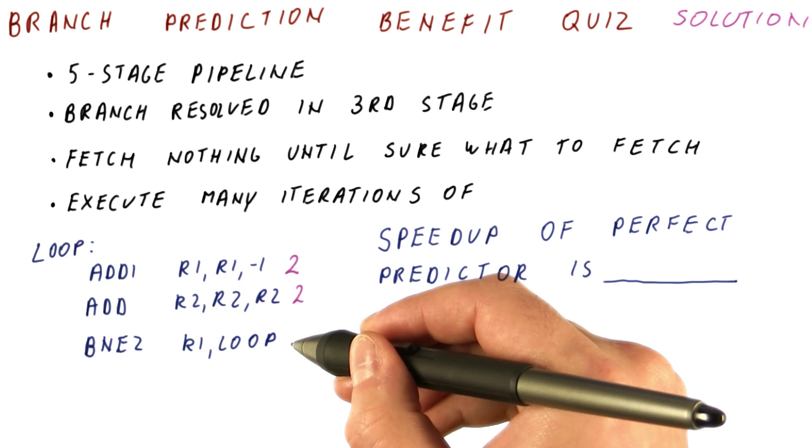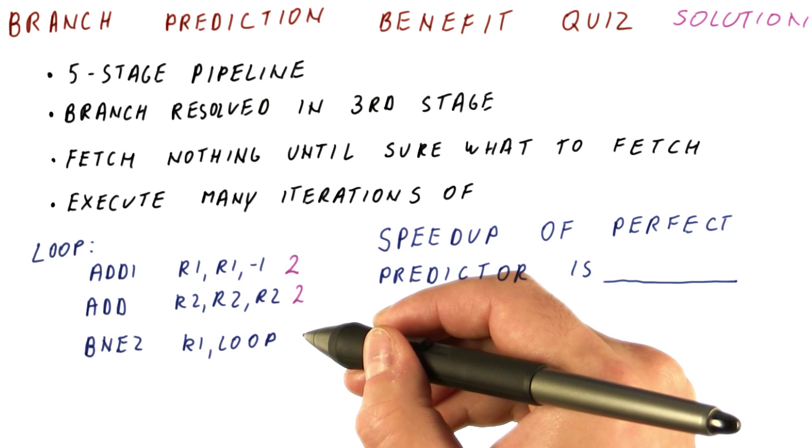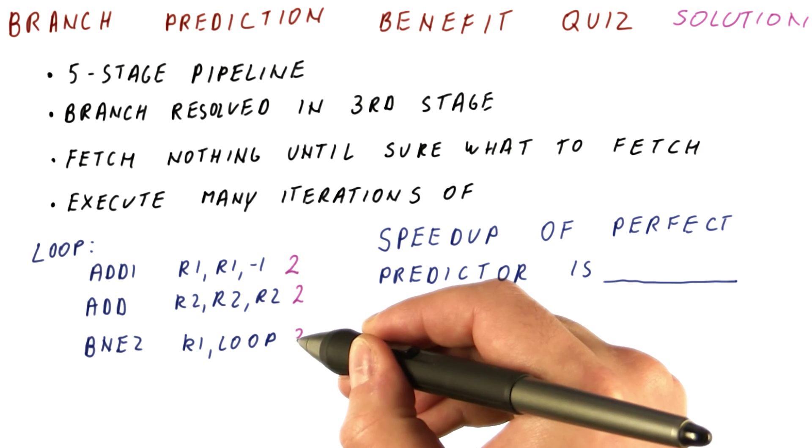For a branch, we fetch it in one cycle, we decode it in the next cycle. We're still not sure what to fetch because now that we know it's a branch, we need to know whether it's taken or not. So the branch costs us three cycles.